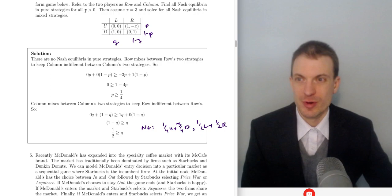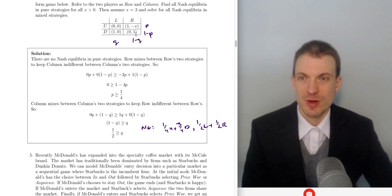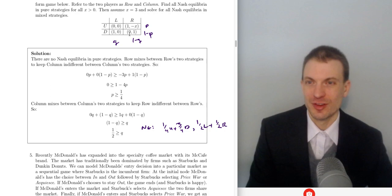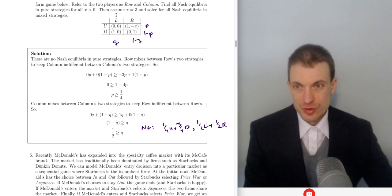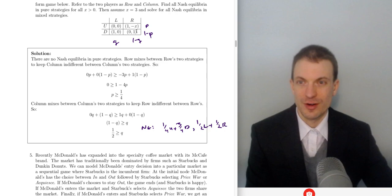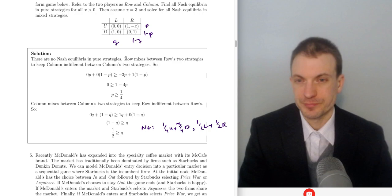Consider the following situation modeled as a normal form game with two players, row and column. Find all Nash equilibria in pure strategies for positive X, then assume X is 3 and solve for all Nash equilibria in mixed strategies. If X is positive, then negative X is below zero. Finding Nash equilibria in pure strategies — there aren't any. If column player were to choose L, row player wants down. If column player were to choose right, row player wants one. If row player chooses up, column player chooses zero (since negative X is below zero). If row player chooses one, column player wants this one. So there's no Nash equilibrium in pure strategies.